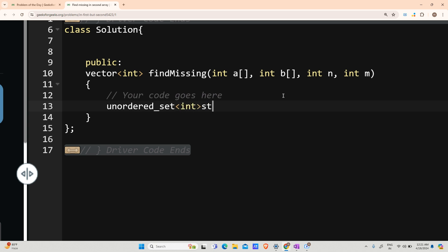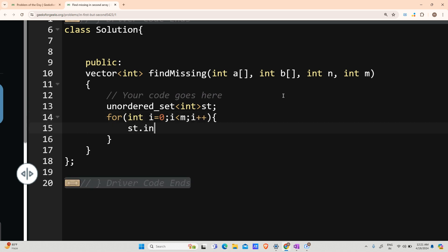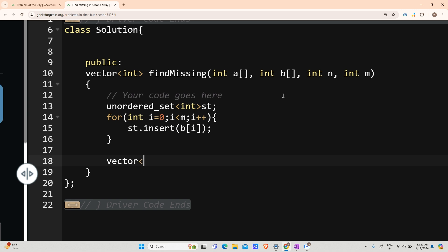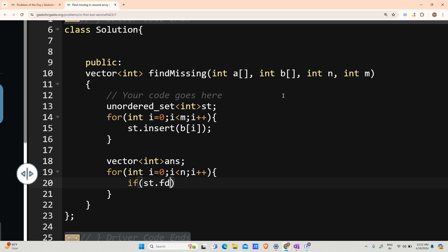We have to make a set of the elements of B. So unordered_set of type int, let us name it as st. After that, for int i going from 0, i less than m because m is the size of B, st.insert(B[i]). After that I will make a vector of int answer, and then traverse A.